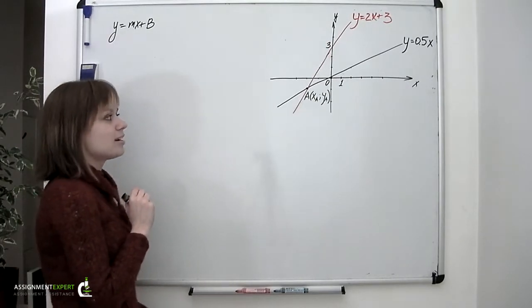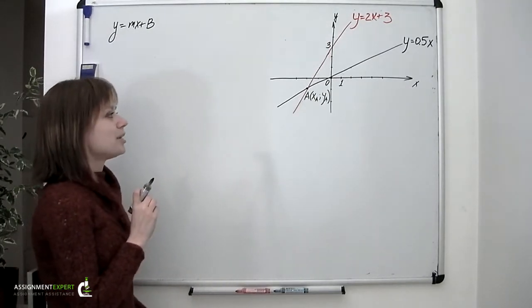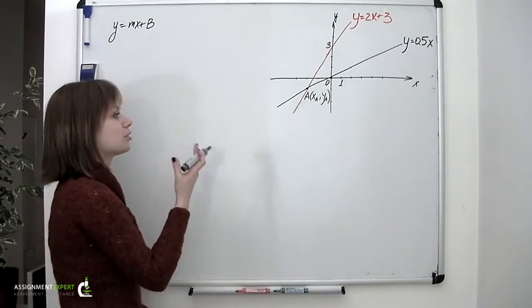Now the point of intersection lies on both lines at the same time. It means that we're going to have to find the coordinates, the point with the coordinates which would satisfy both equations describing these lines.